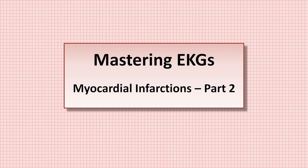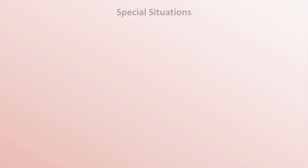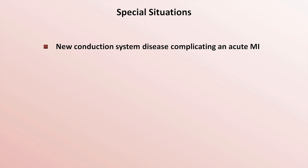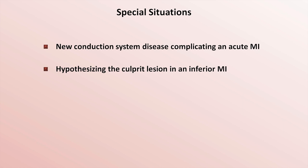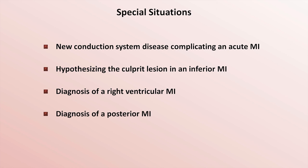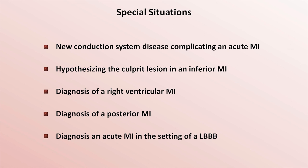This is part two of myocardial infarctions. In this part, I'll discuss five special situations in the EKG diagnosis of an acute MI: new conduction system disease, hypothesizing the culprit lesion in an inferior MI, the diagnosis of a right ventricular MI, the diagnosis of a posterior MI, and the diagnosis of an acute MI in the setting of a left bundle branch block.